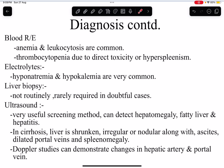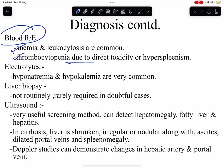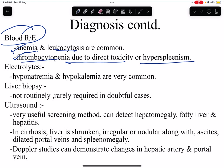On routine blood examination, there may be anemia and leukocytosis. Thrombocytopenia may occur due to direct toxicity of alcohol or due to hypersplenism from progressive splenomegaly. Electrolyte abnormalities such as hyponatremia and hypokalemia may also be present.